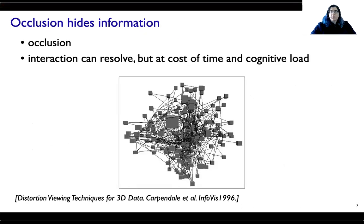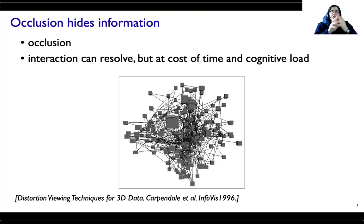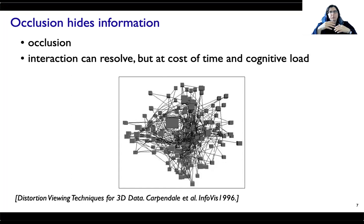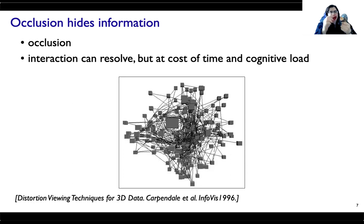What else is tricky about 3D? Occlusion — stuff being in front of other stuff — actually hides information. If you have one thing blocking another, you can spin it around. Here we see an example of a three-dimensional graph. We can resolve occlusion by rotation, but remember that's going to take time and also cognitive load, because of that property where we are remembering what we saw before and comparing that to what we see now. Anytime you resolve the three-dimensional shape of an object by spinning it around, it forces you to actually use memory. So you can resolve occlusion through interaction, but there is a cost.